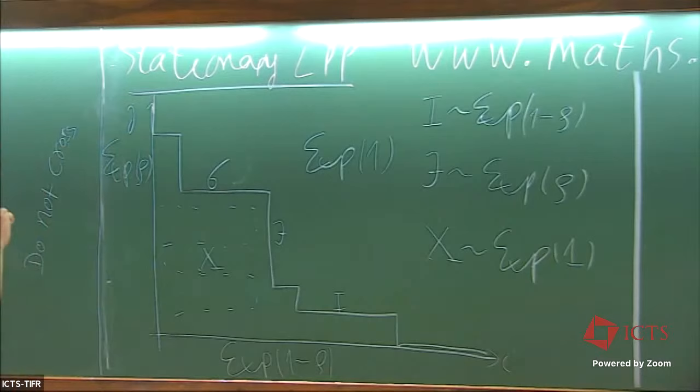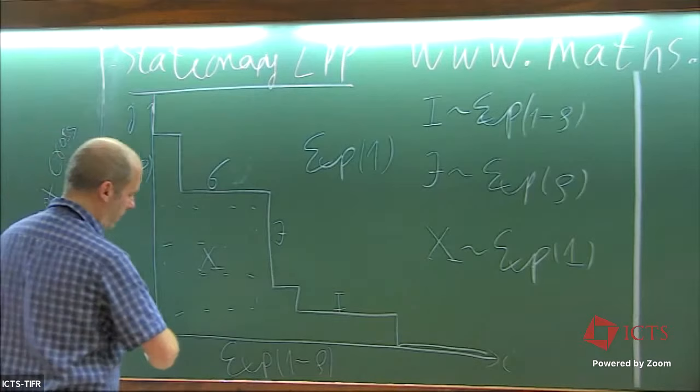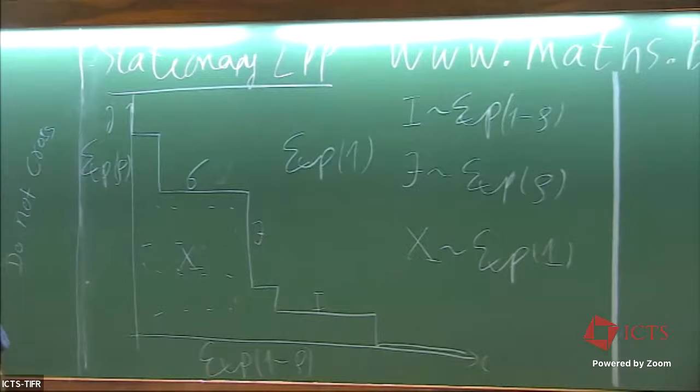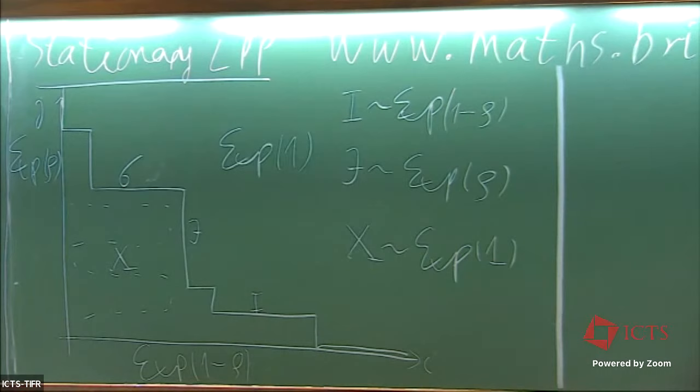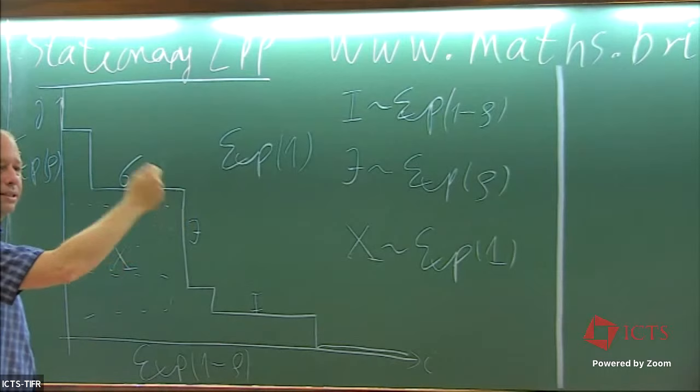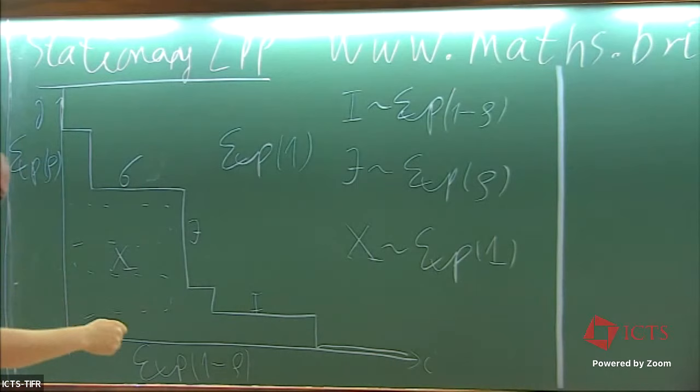Let me continue where we stood last time. We're looking at percolation with exponential one weights. We have the expansion on the vertical axis, everybody is completely independent, and we're looking at the longest possible upright path from the origin to some point n. We introduced the increments of the last passage time: i was a horizontal increment — how much longer it takes to get to a vertex down to its left neighbor — and j was a vertical increment — how much longer it takes to get to a vertex down to its south neighbor.